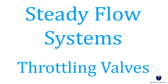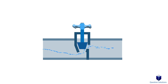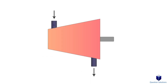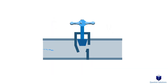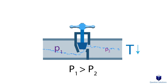Let's talk about throttling valves, another type of steady flow device. A throttling valve is any device that restricts the flow of a fluid and reduces its pressure. A common example you've probably seen before are adjustable valves. Previously we talked about turbines where they create a pressure drop, but that involved work output. In a throttling valve, this pressure drop happens without any work interactions. When the pressure drops, there is usually a temperature drop in the fluid as well.